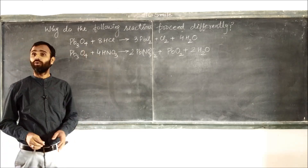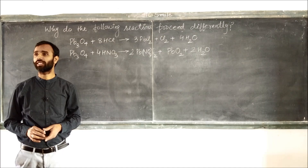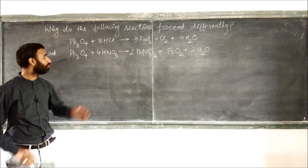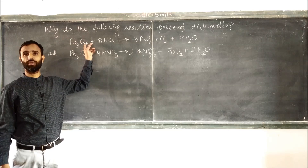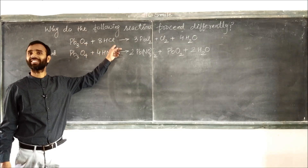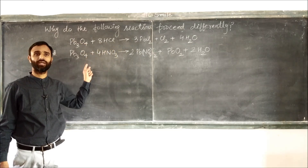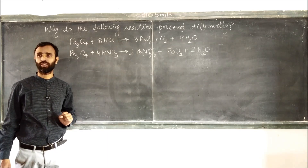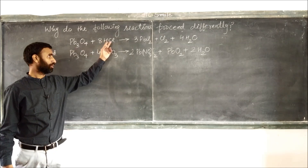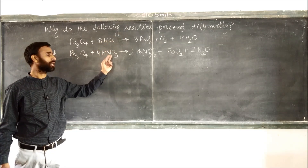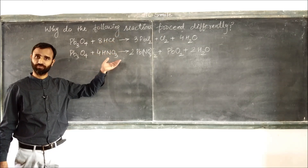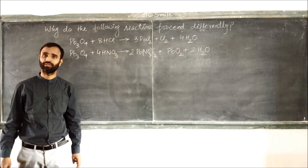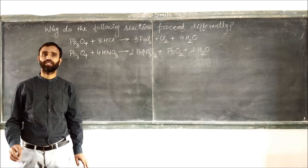The question is: why do the following reactions proceed differently? First is the reaction of Pb₃O₄ with HCl, and second is the reaction of Pb₃O₄ with HNO₃. Both HCl and HNO₃ are acids, but the reactions are quite different. What is the reason?